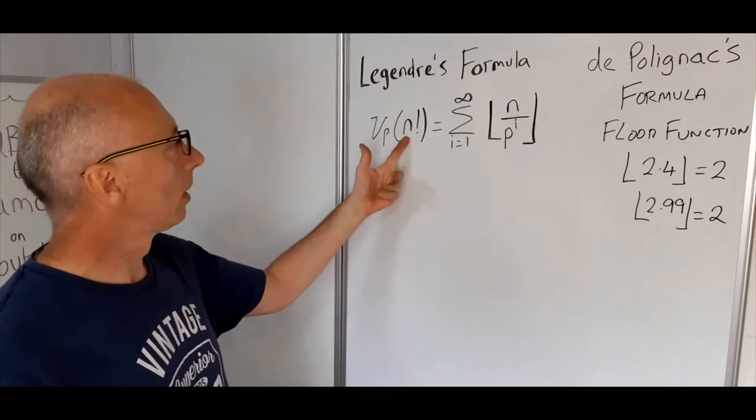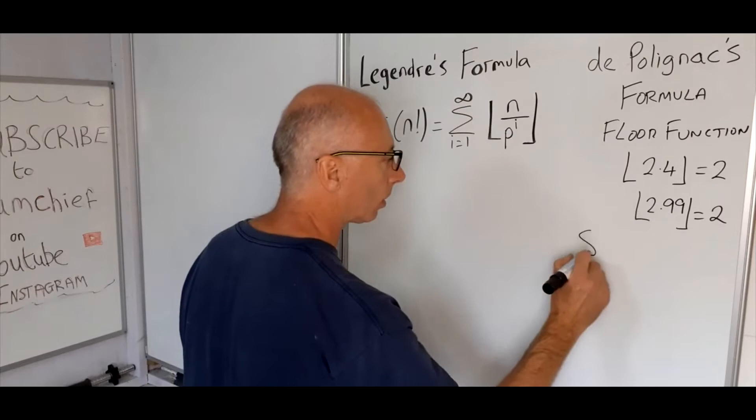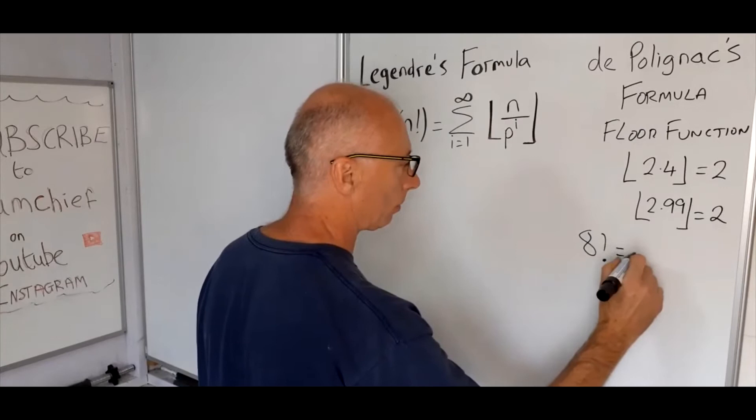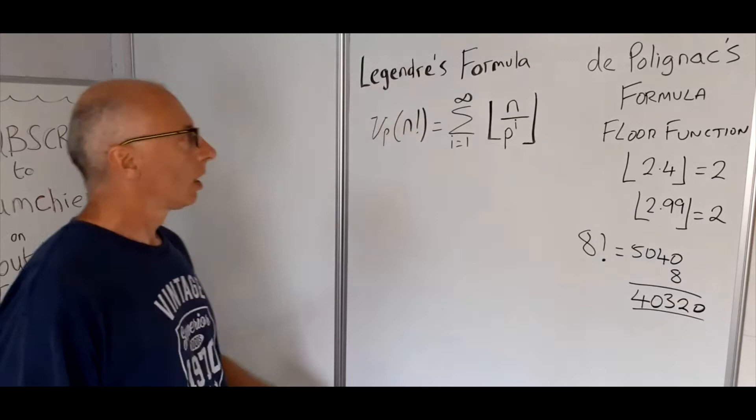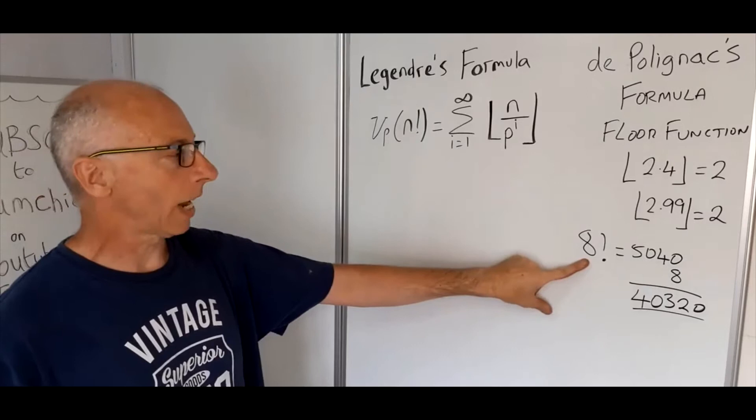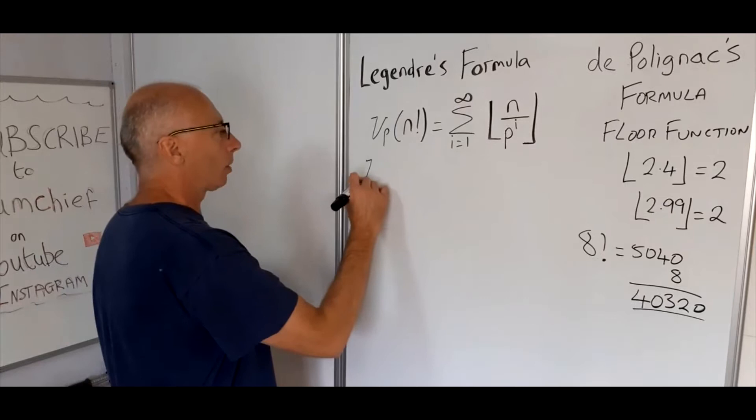Okay, so let's pick a number for n. Let's try 8. So 8 factorial is, well 7 factorial is 5040, so if we times that by 8 we get 40,320. Now we're going to pick a prime number that is below 8. Let's try just 2 for now.